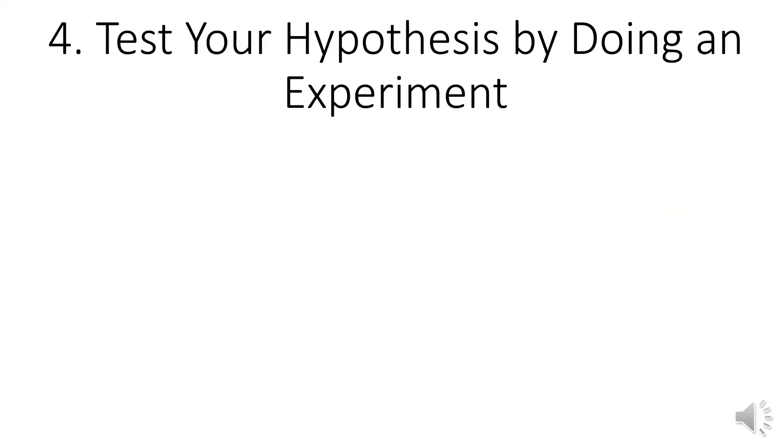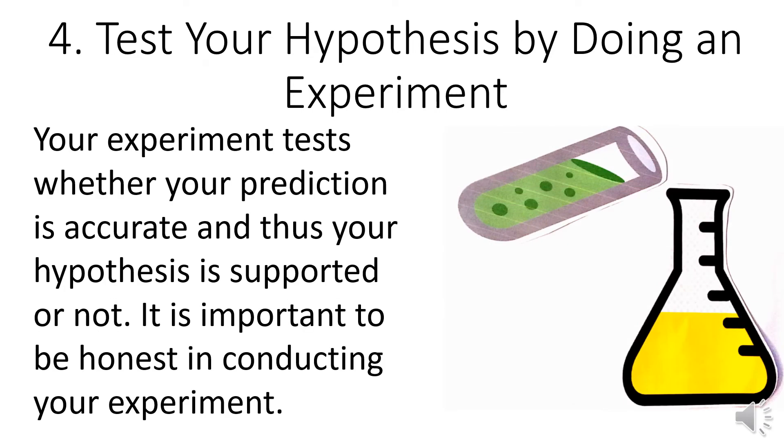Step 4: Test your hypothesis by doing an experiment. Your experiment tests whether your prediction is accurate and thus your hypothesis is supported or not. It is important to be honest in conducting your experiment. You can ensure a fair and honest experimentation by making sure that you change only one variable at a time while keeping all other conditions the same. You should also repeat your experiment several times to make sure that the first results weren't just an accident. It will be easier to set up three replicates of your subject to minimize the need to repeat the whole process of experimentation.